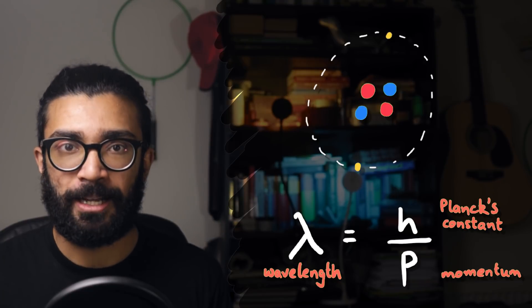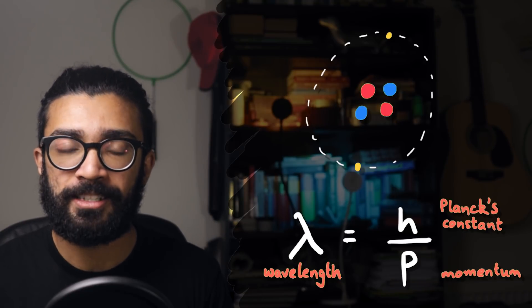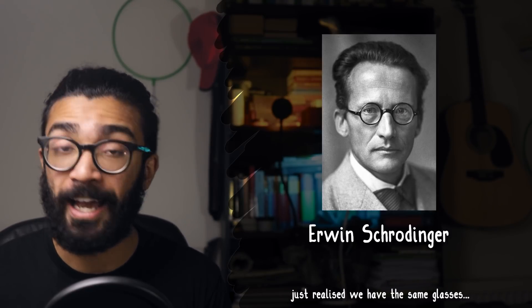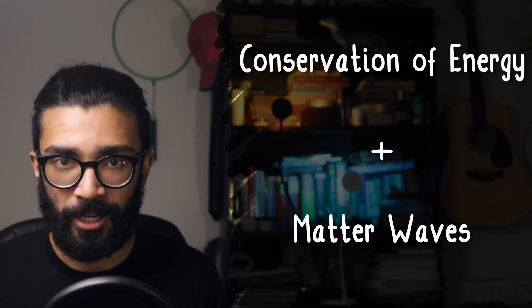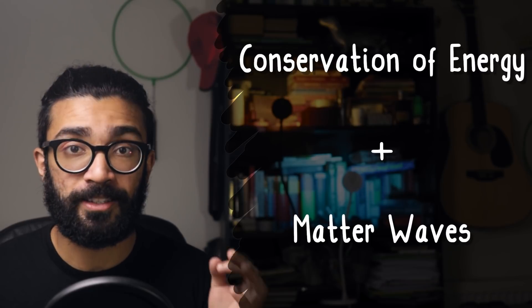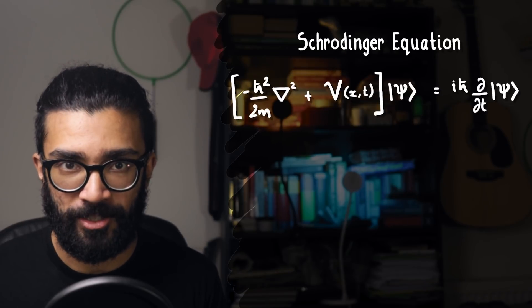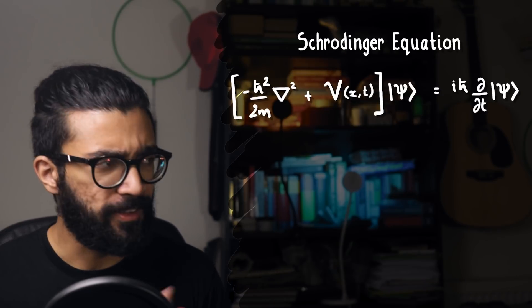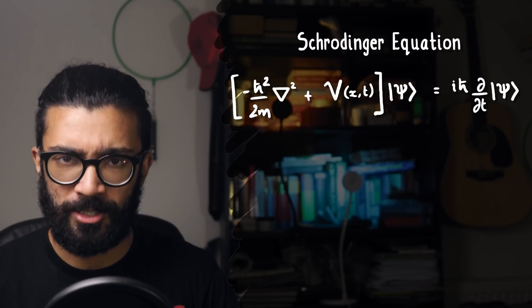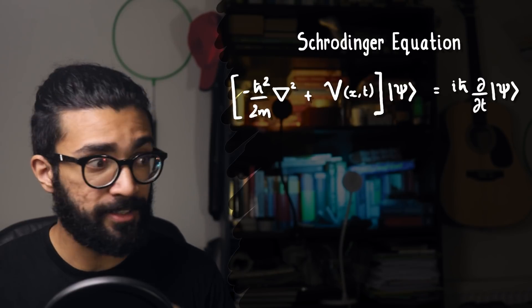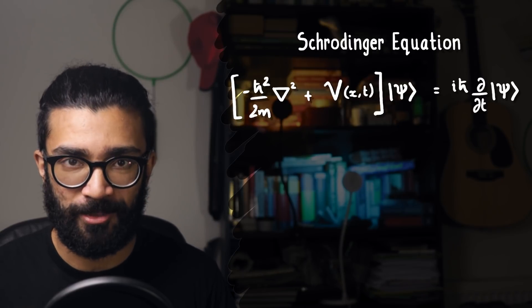This idea of matter waves permeated into the work of a physicist named Erwin Schrödinger — yeah, that one. He used the principle of conservation of energy, as well as this idea of matter waves, to come up with the Schrödinger equation. As I've discussed in previous videos, this is the governing equation of the quantum mechanical world. It's the big boy in quantum mechanics.